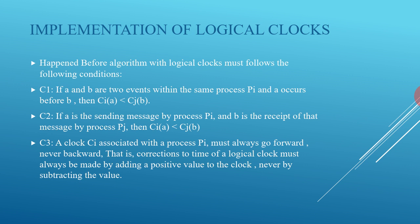Implementation of logical clocks: the happened-before algorithm with logical clocks must follow three conditions. First, if A and B are two events in the same process Pi and A occurs before B, then Ci(A) < Cj(B). Second, if A is the sending of a message by process Pi and B is the receipt of that message by process Pj, then Ci(A) < Cj(B). Third, a clock Ci associated with process Pi must always go forward, never backward — corrections to the time of a logical clock must always be made by adding a positive value, never by subtracting.